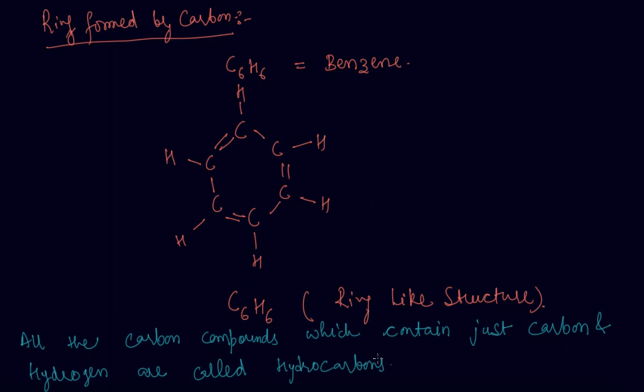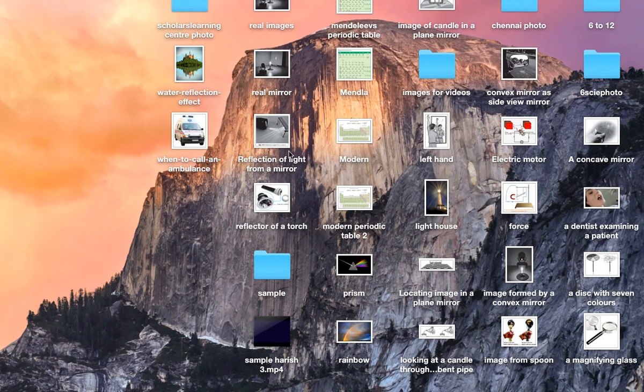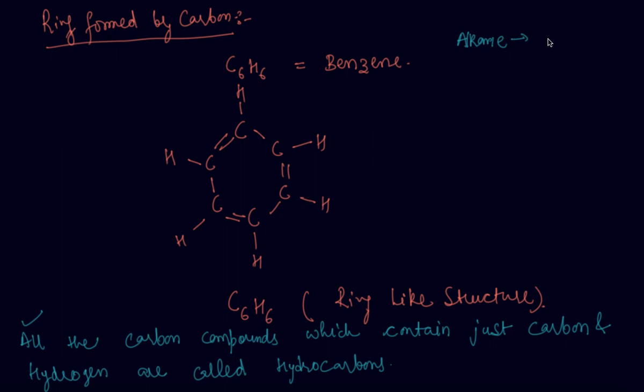If anybody asks you what is hydrocarbons, then you will write this definition. As I have told you that alkanes are those hydrocarbons which have formula CnH2n plus 2. Alkene is CnH2n, and alkyne is CnH2n minus 2.